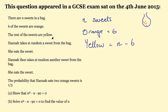Then we're told Hannah takes at random a sweet from the bag, then takes another sweet, so she's taken two sweets. We're told the probability that she eats two orange sweets is one third. If she picks one orange sweet, the probability is the number of orange sweets out of the total — six out of n.